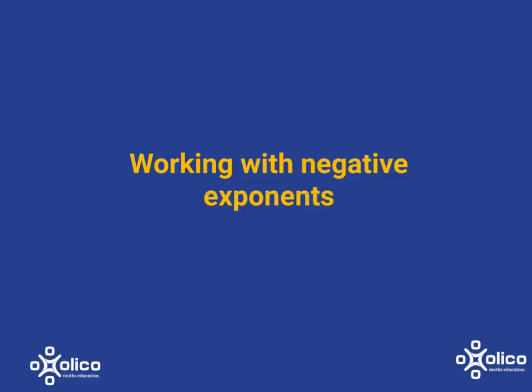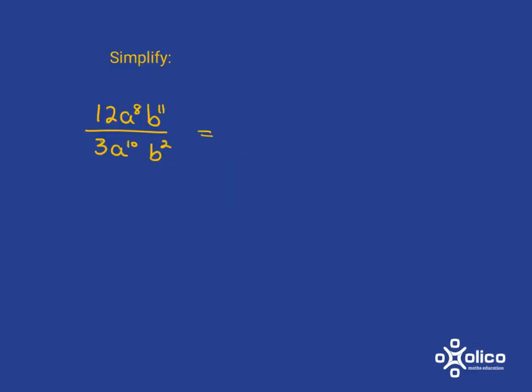Let's look at some extra work that includes working with negative exponents. If you're asked to simplify something like this, remember you just need to work with each of the bits individually. So first let's just do 12 divided by 3 and that gets me the answer of 4. Now we're going to deal with the a's. So with the a's you've got a to the 8 and it's divided by a to the 10.